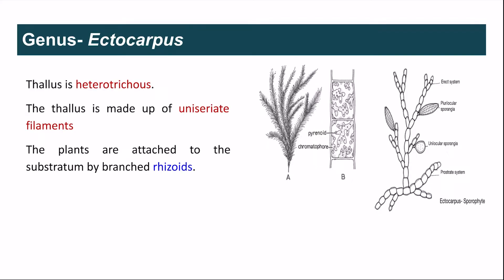The thallus in Ectocarpus is heterotrichous, consisting of an erect system of branching and a prostrate system of branching. Both systems are uniseriate filaments — that is, they are made up of a single row of cells, also known as the monosiphonous condition. The prostrate system consists of branched rhizoids, and with the help of rhizoids, the thallus attaches to the substratum.